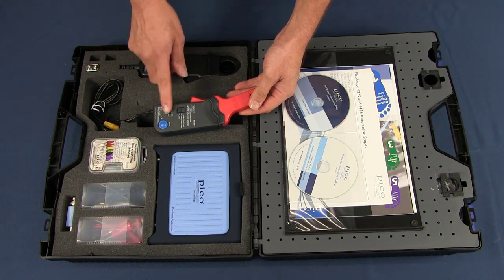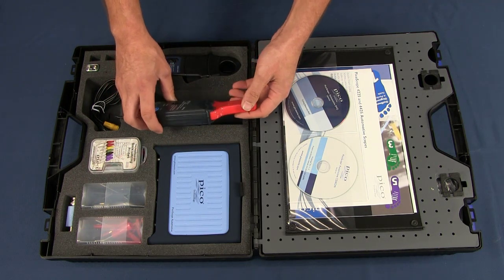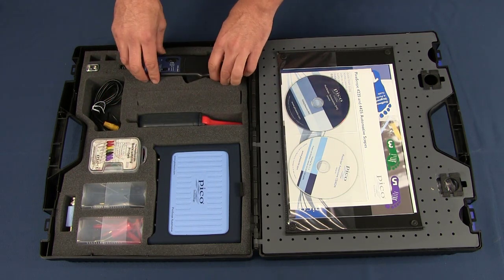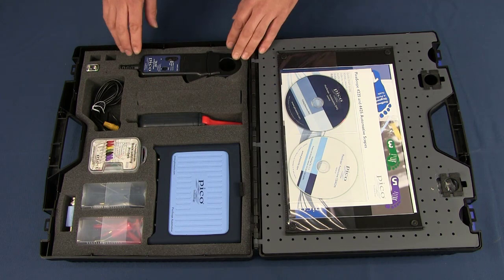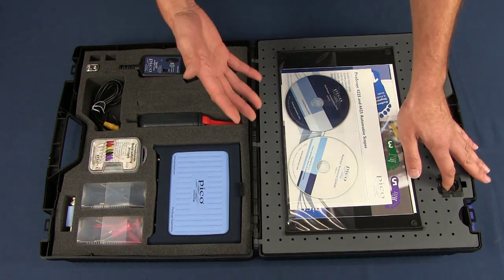Two current clamps: a 2060 and a 2000 amp. The 2060 is great for looking at injectors, especially now as a lot of plant and agriculture is going into common rail. The 2000 amp clamp is for starter motors, which is a good battery test.